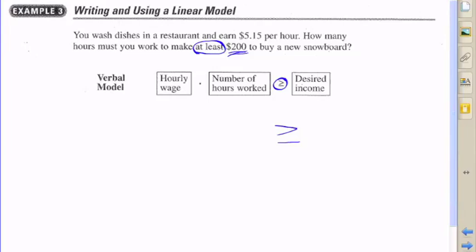The unknown is the number of hours. So we're going to set the desired income—we need at least $200—and the hourly wage of $5.15 is going to be multiplied by the variable h, which stands for hours.